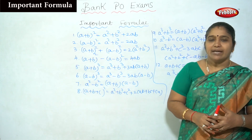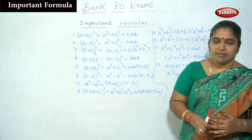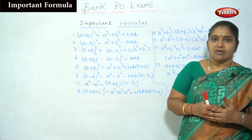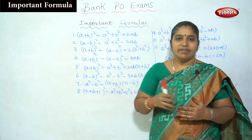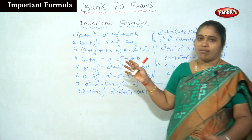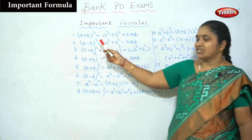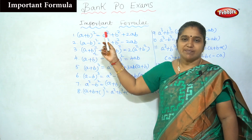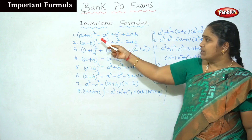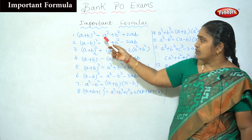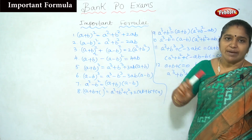Now let us see the basic formulas needed for the sums. These are important formulas. The first one is (a + b) whole squared. We all know the basic formula: (a + b)² = a² + b² + 2ab.